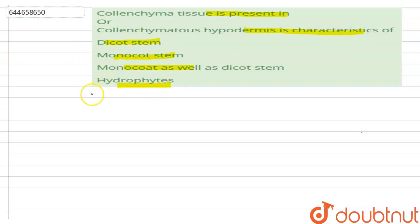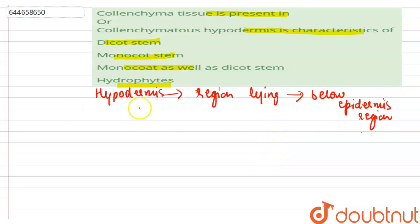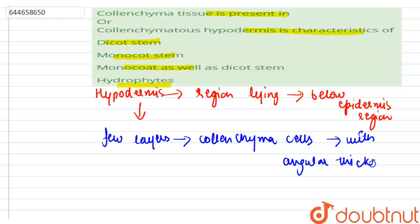So hypodermis is a region lying immediately below the epidermis region. Hypodermis is represented by few layers of colenchyma cells with angular thickenings in dicot stem.